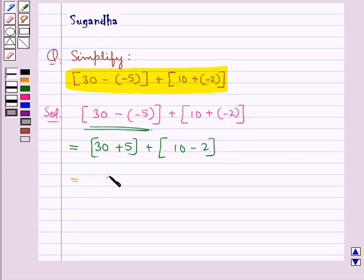So this is equal to 35 plus 8 which is equal to 43.